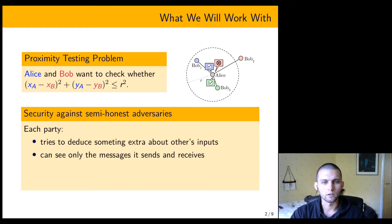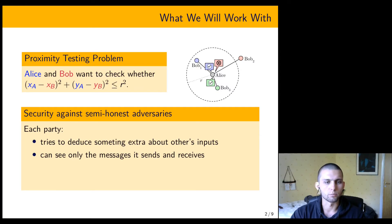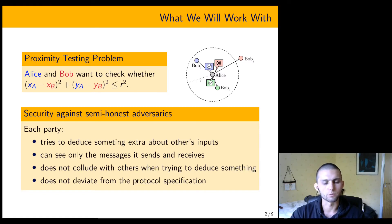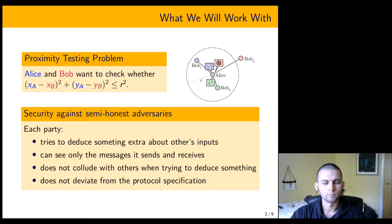In the setting of security against semi-honest adversaries, we allow any of the parties to try to deduce something about other parties' inputs only by looking at the messages that the party receives. So the adversary cannot deviate from the protocol specifications, cannot modify messages sent by some party, and cannot capture messages of multiple parties. The adversary can see messages of only one party and tries to learn something from that.